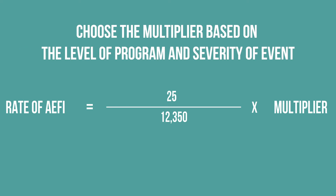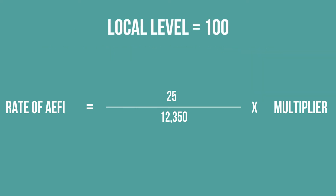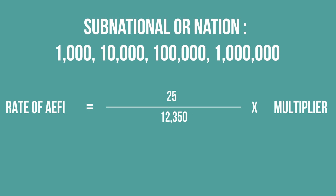Next, identify the appropriate multiplier. The multiplier you choose will depend on the level of the program you're evaluating as well as the severity of the event. Use 100 for calculating rates at the local level or if the AEFI is a common minor reaction — this will give you a percentage. Use a large multiplier — 1,000, 10,000, 100,000, or 1,000,000 — if you are calculating rates at the sub-national or national level, or if the AEFI is a rare serious reaction.